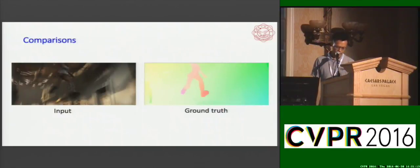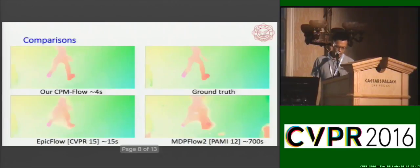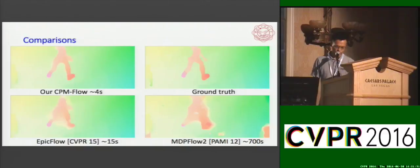Here are two consecutive images and the corresponding ground-truth flow. We compare our method with two state-of-the-art algorithms. Similar to EpicFlow, our method benefits from interpolation to produce sharp motion boundaries and correct estimation on occluded areas. Note how tiny structures are captured by CPM flow — even small details like the names of characters are captured. Furthermore, CPM flow is much faster than the other methods.